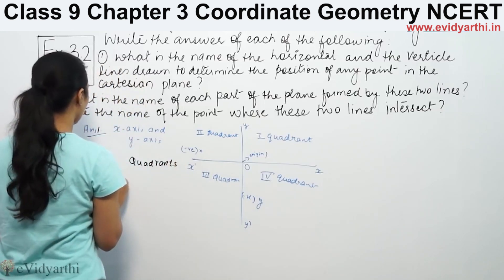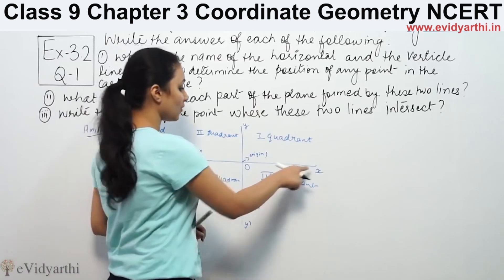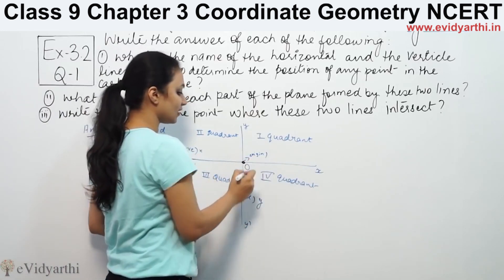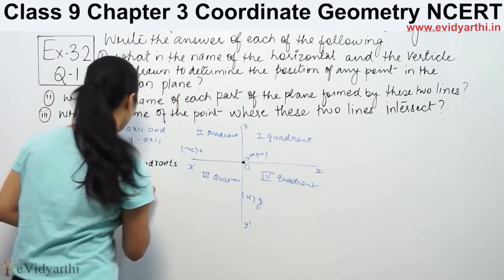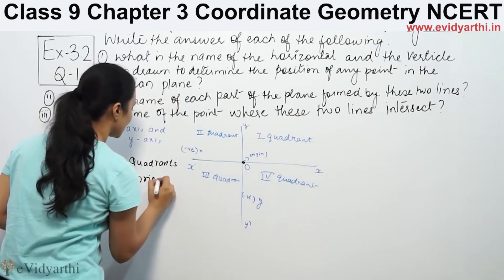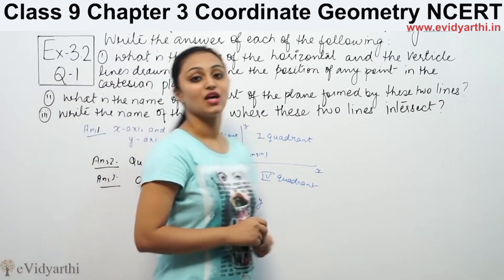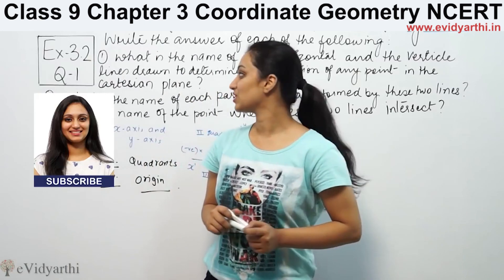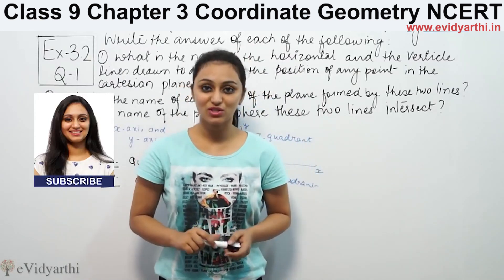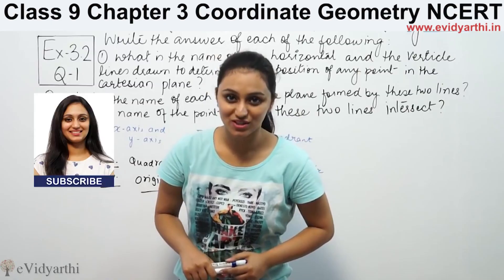Then, what is the name of the point where the two lines intersect? The point where they meet at the center is called the origin. So, this was question number one from exercise 3.2. Do watch the next video for the rest of the questions.